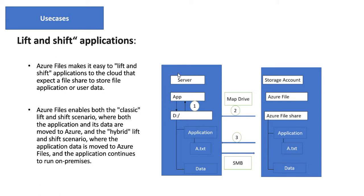The application data is stored on-premises. With the help of Azure Storage Account and Azure File Share in the cloud environment, we can lift the application. There are basically two types of lift: classic or hybrid. In classic lift, you move your application and its data to the cloud itself. In hybrid mode, your application stays on-premises and you store your data in Azure File Share.